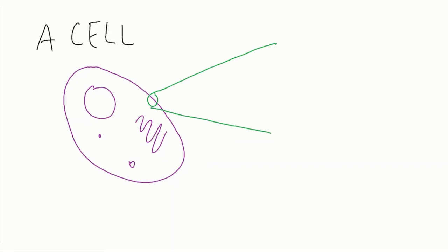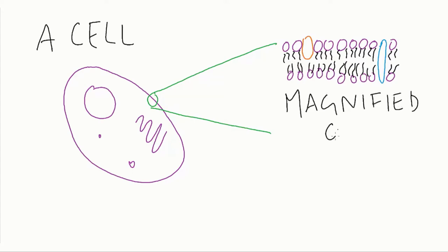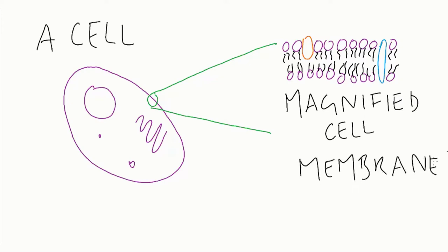Today, we are going to talk about what is the cell membrane. Every living organism is composed of individual cells, and each of them are surrounded by a double layer of lipid — the cell membrane. Basically, it keeps everything together.